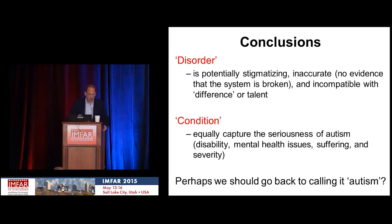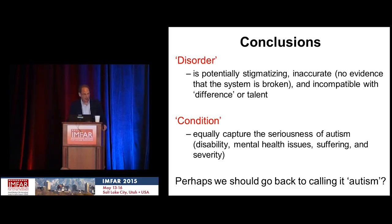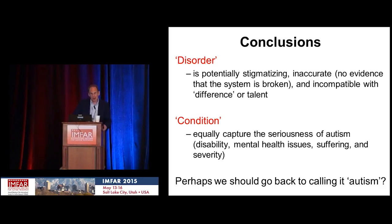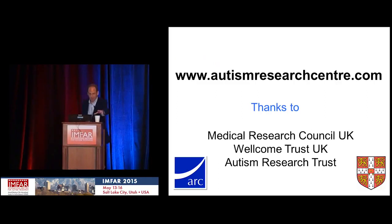My conclusions: the term 'disorder' — we've inherited it — and maybe it's time to have a rethink. It's potentially stigmatizing to tell someone they are disordered. It may be inaccurate, as there's no evidence the system is broken, and it's incompatible with notions of difference or talent. The term 'condition' equally captures the seriousness of autism as a disability, with its mental health issues, suffering, and severity. Maybe we should just go back to where we started and simply call it autism. Thank you very much.